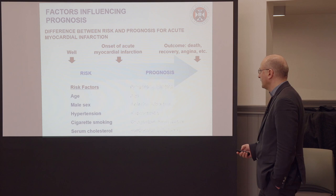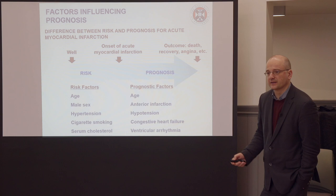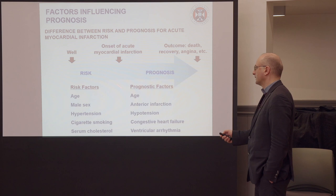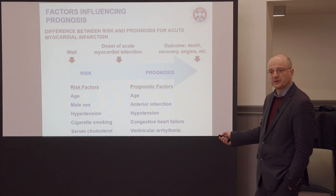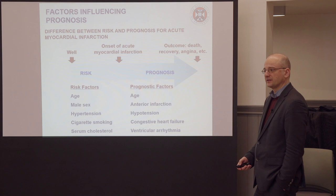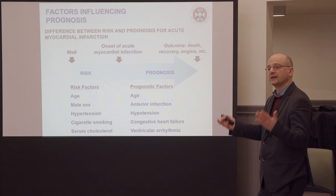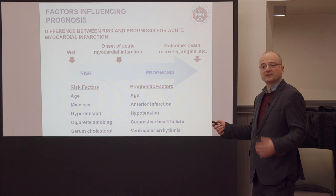Note that the same things can be in both categories — risk factors and prognostic factors. Age is both a risk factor to get a heart attack and then becomes a prognostic factor for what's going to happen. Male sex and cigarette smoking are risk factors, but then completely different things become prognostic factors: anterior infarction, hypotension. Hypertension is a risk factor, but once you have a heart attack, hypotension is a bad prognostic sign. Serum cholesterol can be a risk factor, but once people get a heart attack and survive, they'll be on cholesterol-lowering treatments and it's no longer a prognostic factor.